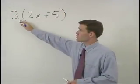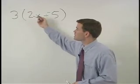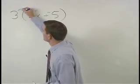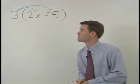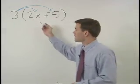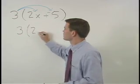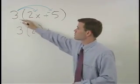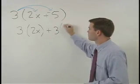Now we can distribute, or multiply, this 3 times each of the terms inside the set of parentheses. So we get 3 times 2x, plus 3 times negative 5.